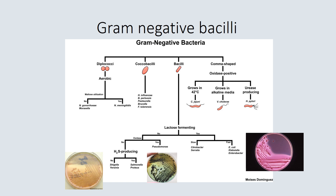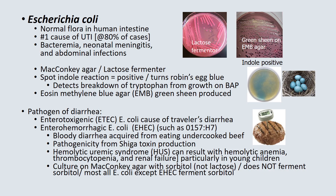Now we will move into the most important gram-negative bacilli. There are hundreds of gram-negative bacilli and there is not time to discuss all of them. The most important of all the gram-negative rods, and by far the most common, is Escherichia coli. It is of course normal flora in the human intestine and is the primary cause of urinary tract infection, but it can also cause bacteremia, neonatal meningitis, and abdominal infections.